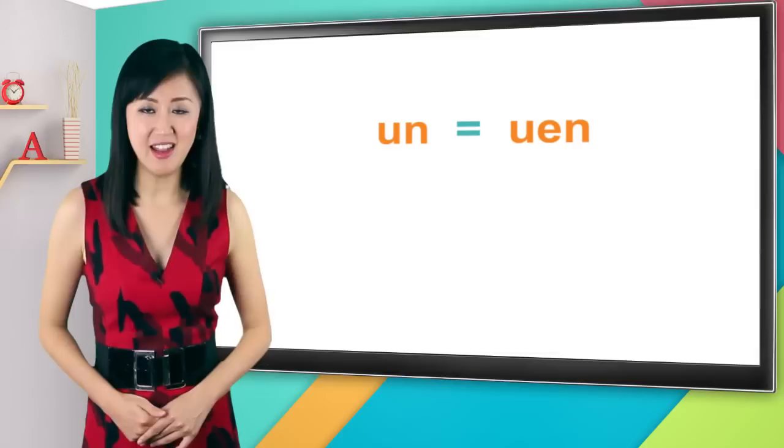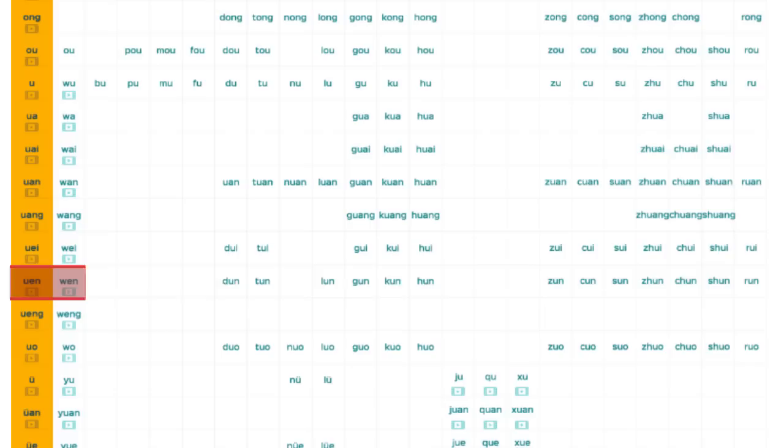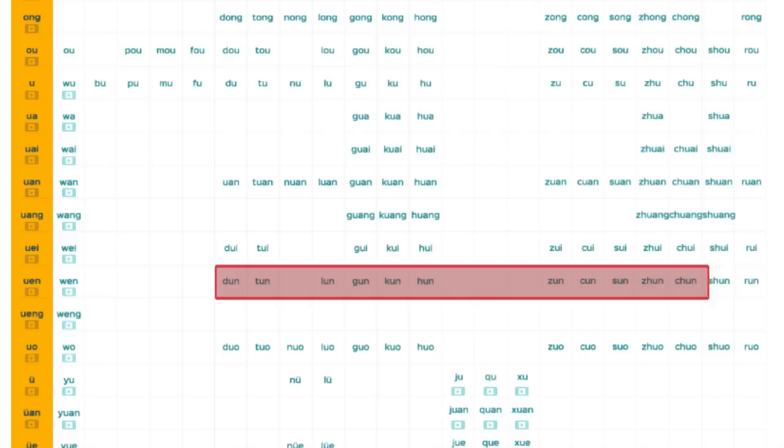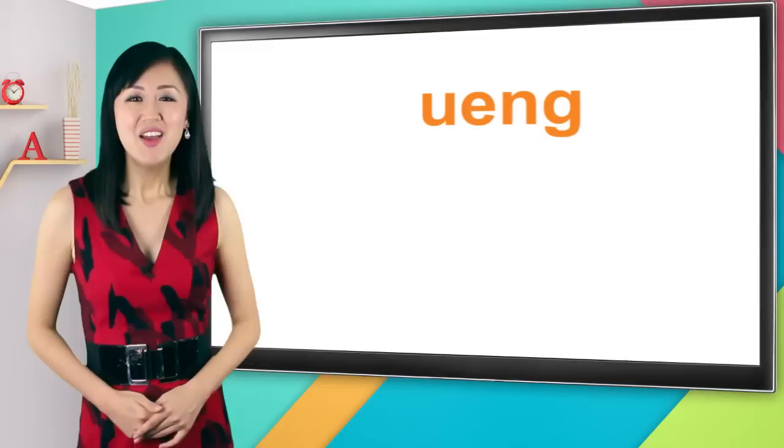Again, don't ask me why, that's just the way it is. Just remember, u-n equals u-e-n and vice versa. Let me show you on the pinyin chart. Here's the u-e-n row, and here's how it's spelled when it stands alone, w-e-n. And in the rest of the row, you see how it appears with various initial sounds, spelled u-n.